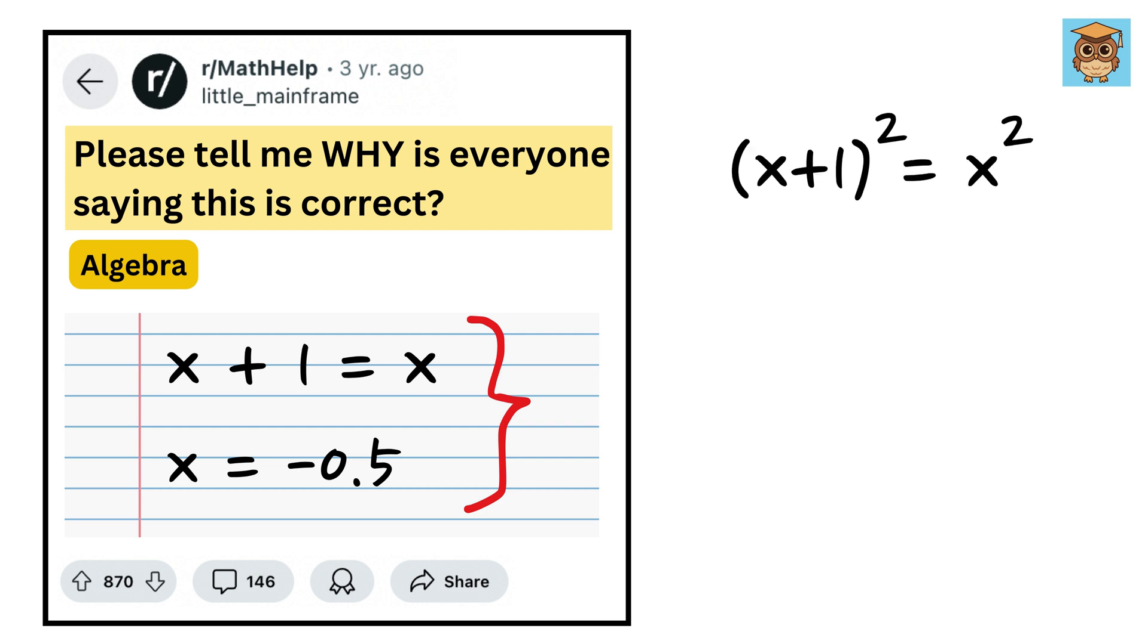When you square both sides of this equation, we get (x + 1)² = x². Now (x + 1)² equals x² + 2x + 1, and this equals x². So the x² terms get cancelled out.